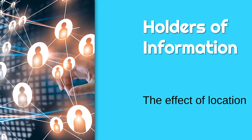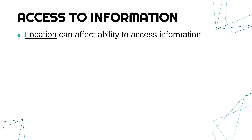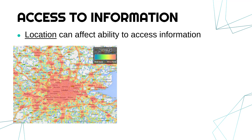We're now going to talk about the effect of location on your ability to access information. Where you are — your location — can massively affect how information is available to you. Now we have networks, we have the internet and so on, but not everyone, even in England, even in the UK, has got consistent access based on their location.